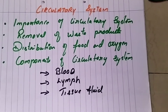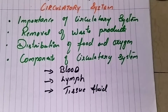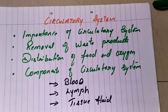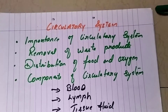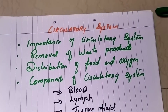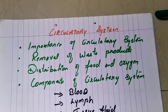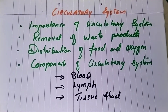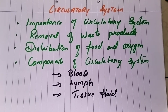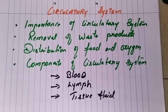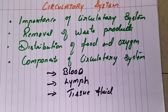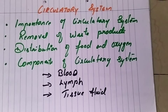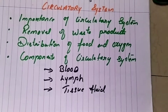Regarding the distribution of food and oxygen: in any unicellular or multicellular aquatic organism, cells receive nutrients and oxygen by direct diffusion from their surroundings. But in higher and complex organisms, substances cannot reach every cell, so they need to be transported to various body cells. This resulted in the evolution of the circulatory system, which plays a significant role in the distribution of oxygen and food.